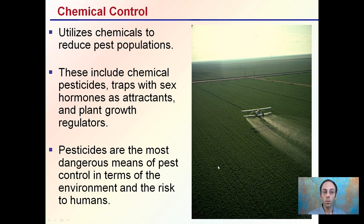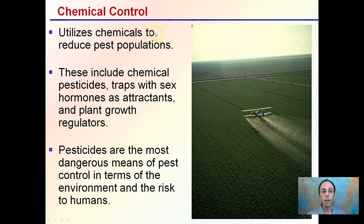Chemical controls utilize chemicals to reduce pest populations. This includes pesticides, traps, sex hormones and attractants, and plant growth regulators — all of which fall under the chemical control category. Pesticides are the most dangerous means of pest control in terms of risks to humans and the environment, so be mindful of which particular chemical you're using, as it can have varying risks to not only the applicator but also the environment.